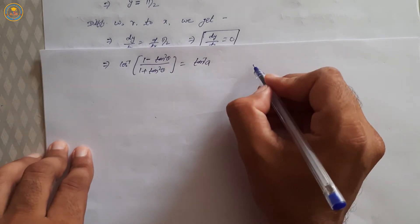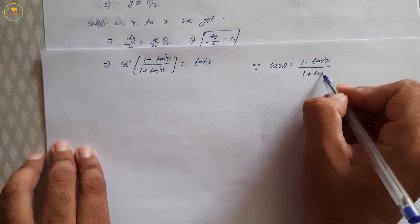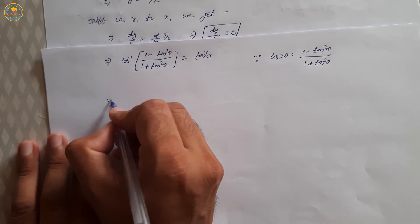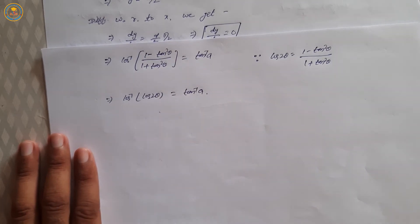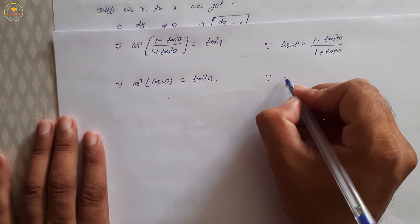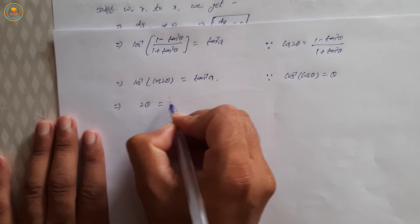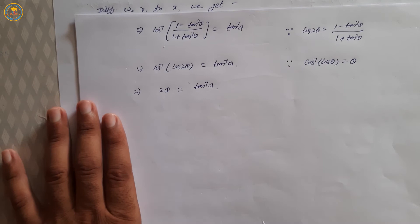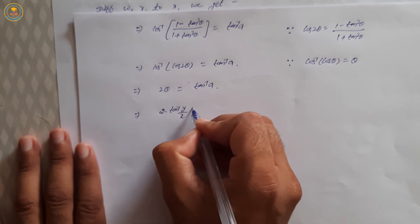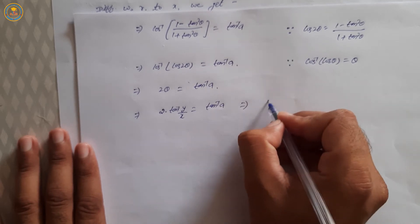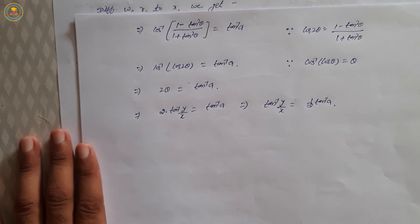Apply the formula: cos inverse of cos 2 theta equals tan inverse a. Using cos inverse cos theta equals theta, we get 2 theta equals tan inverse a. Putting the value of theta: 2 into tan inverse (y/x) equals tan inverse a.